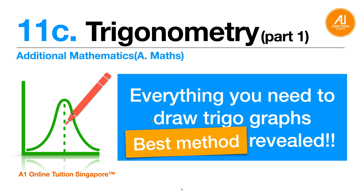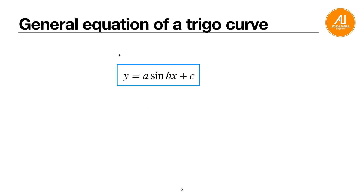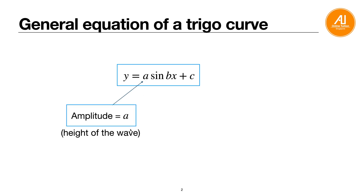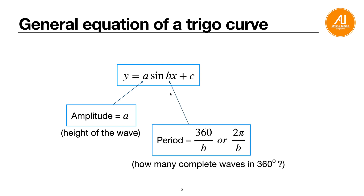The general equation of a trigonometric graph uses the example y equals to a sine bx plus c. Here, 'a' represents the amplitude — the maximum displacement or maximum height of the wave. 'b' helps you find the period of the wave, which is 360 over b in degrees or 2 pi over b in radians — essentially how many complete waves fit in 360 degrees.